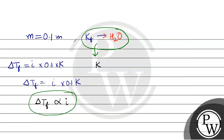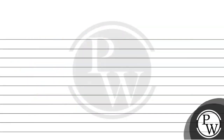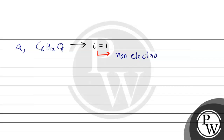Let's calculate the van't Hoff factor for each option. First, glucose is given. Glucose is a non-electrolyte — it does not break down (dissociate) when it goes into water. Therefore, its van't Hoff factor i equals 1.